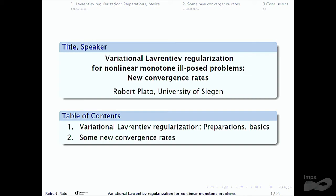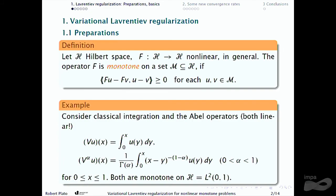Here are some details: I will speak about the method first, give some preparations and basic notations, and in the second part of the talk I will speak about the convergence results. First I will recall the convergence result, then I will speak about the rates. Here is the general setting: I will consider an operator F operating in a Hilbert space H, which is allowed to be nonlinear in general.